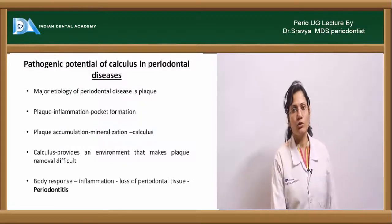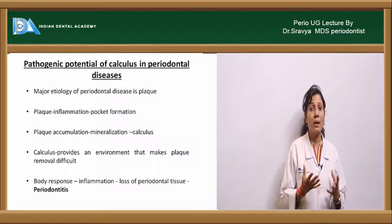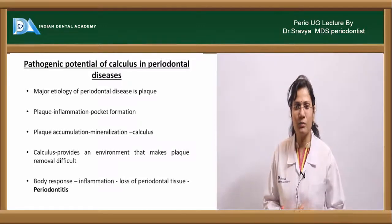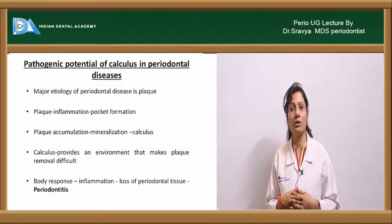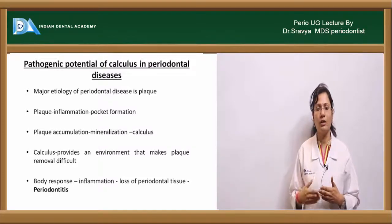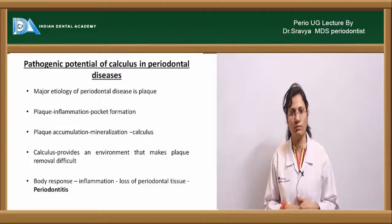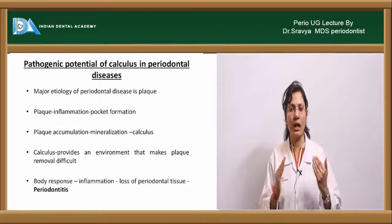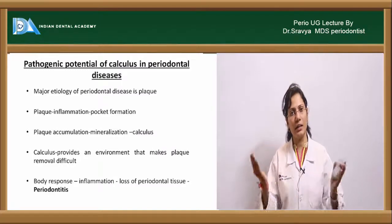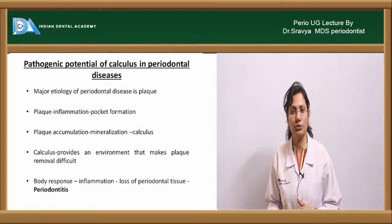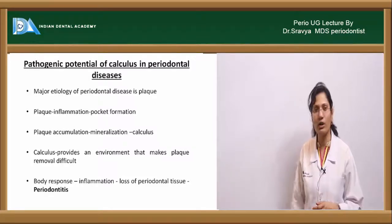Regarding the pathogenic role of calculus in periodontal disease: earlier, calculus was considered the main culprit for periodontal disease. Later research showed plaque is the true culprit, with calculus playing a secondary role. Calculus acts as a nidus for further plaque accumulation because its rough surface harbors more plaque, which then gets mineralized again, and the cycle continues. Calculus also brings bacterial deposits in close proximity to soft tissues and prevents the patient from performing proper oral hygiene.